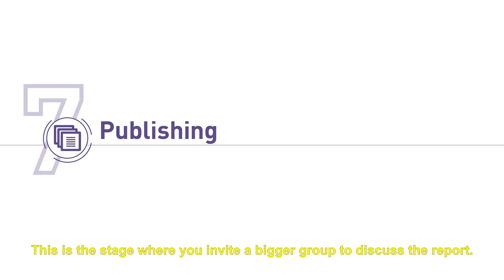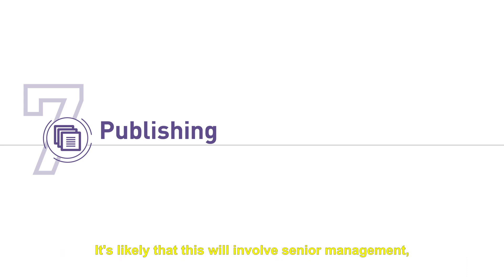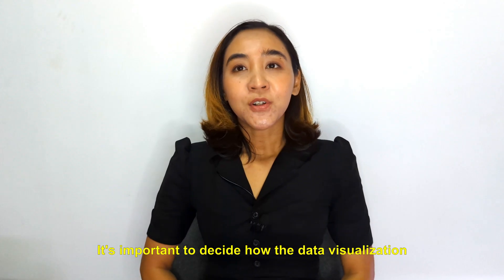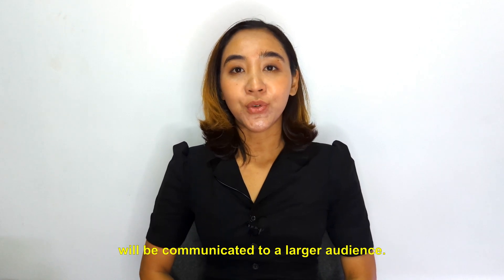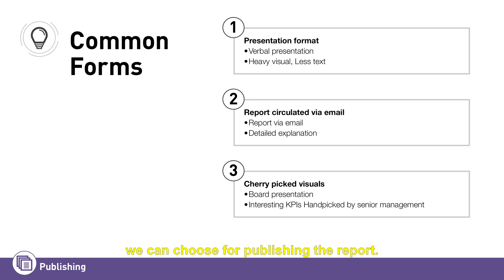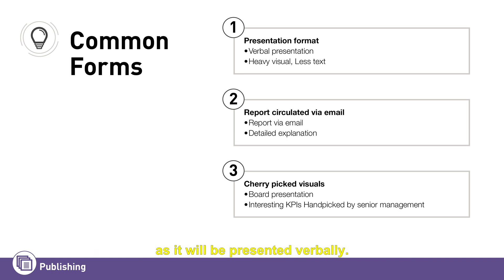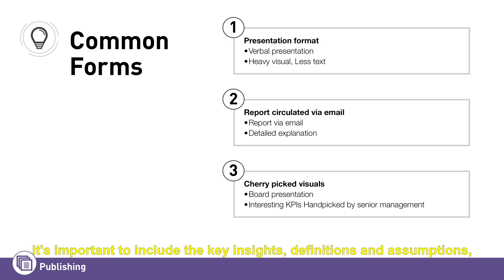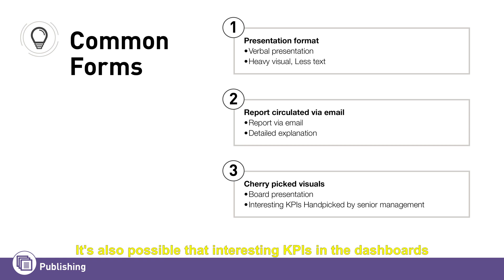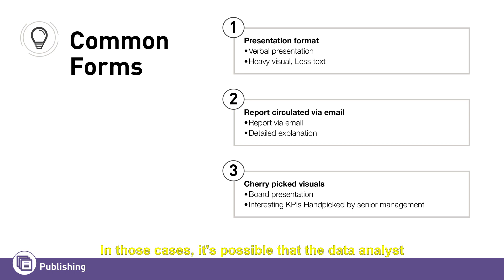The next stage is publishing. This is where you invite a bigger group to discuss the report — likely involving senior management to discuss how the report's content can impact strategic direction. There are a couple of approaches for publishing. If it's a presentation delivered in a meeting, the data analyst can go heavy on charts and graphs as it will be explained verbally. However, if it's a report format, it's important to include key insights, definitions, and assumptions so the report is self-sufficient. It's also possible that interesting KPIs from the dashboard are adapted to fit the overall tone of a board presentation.